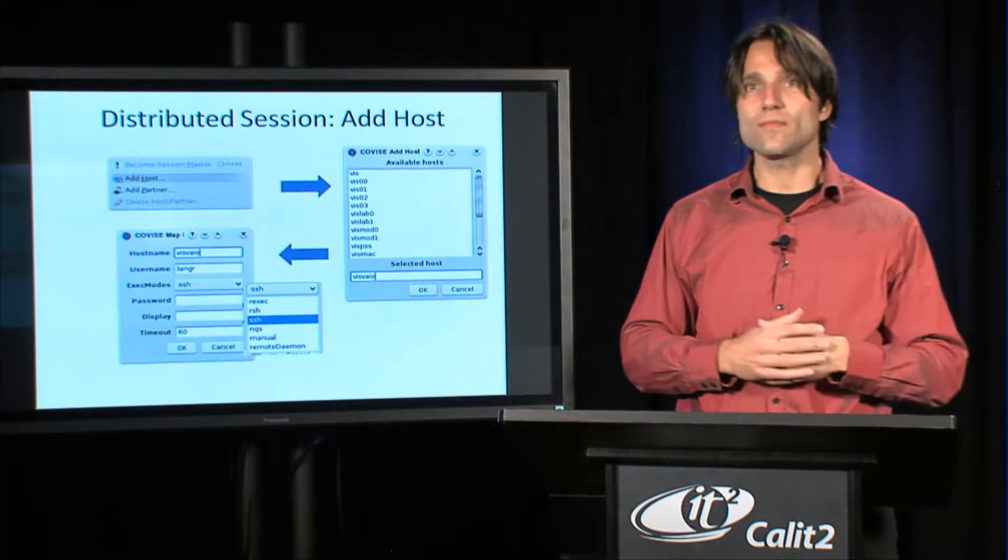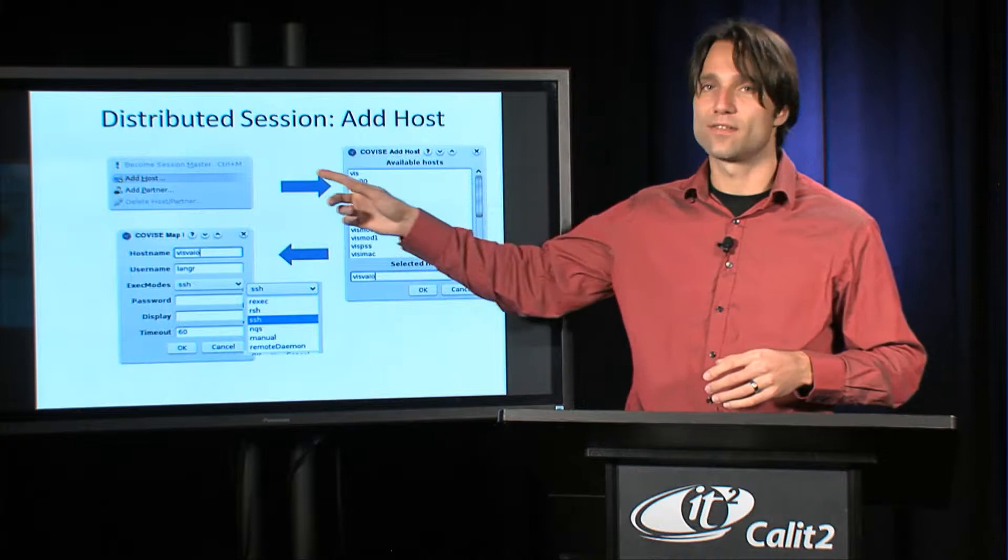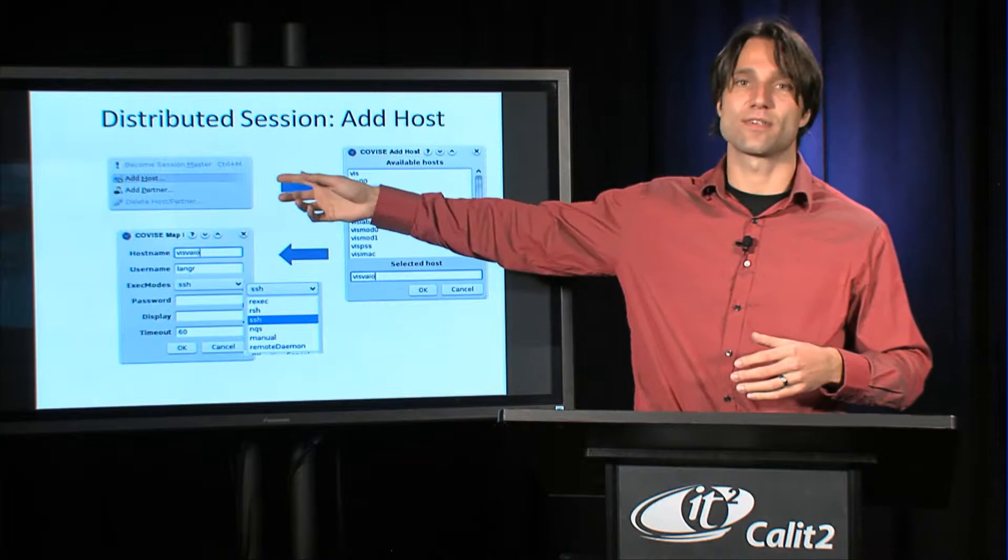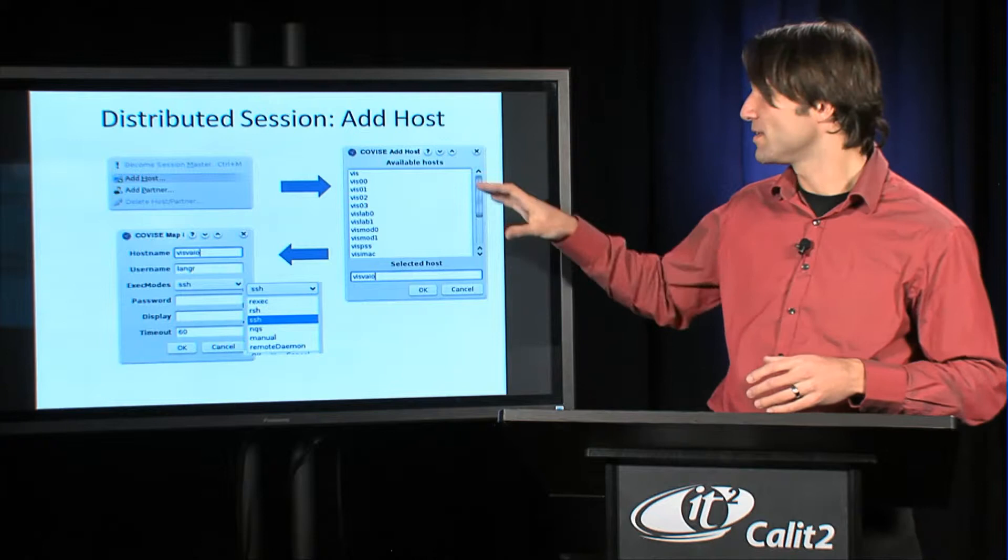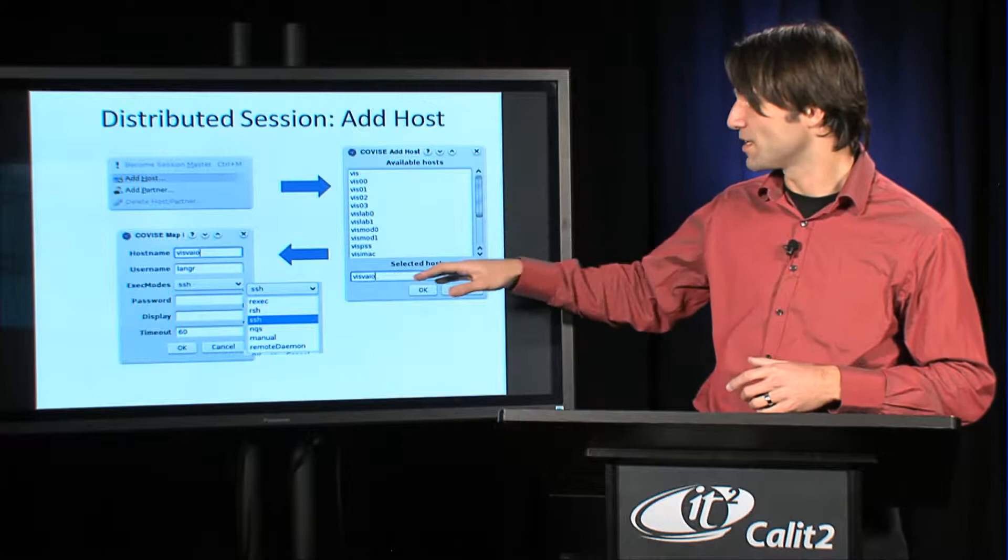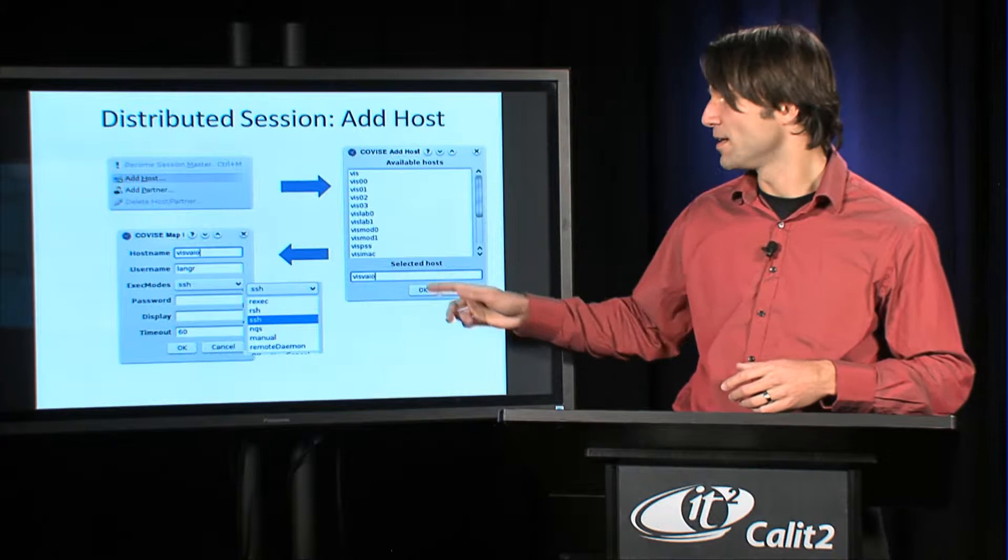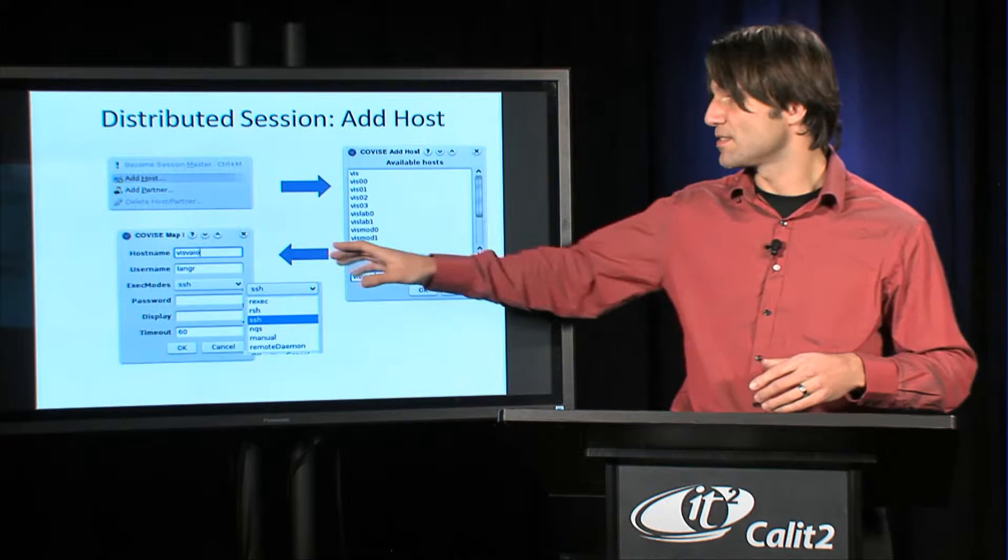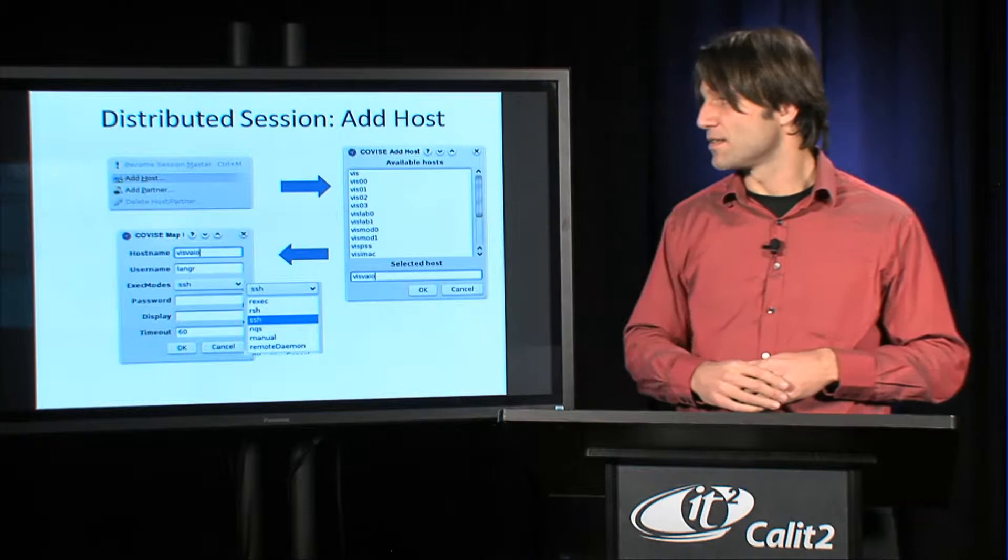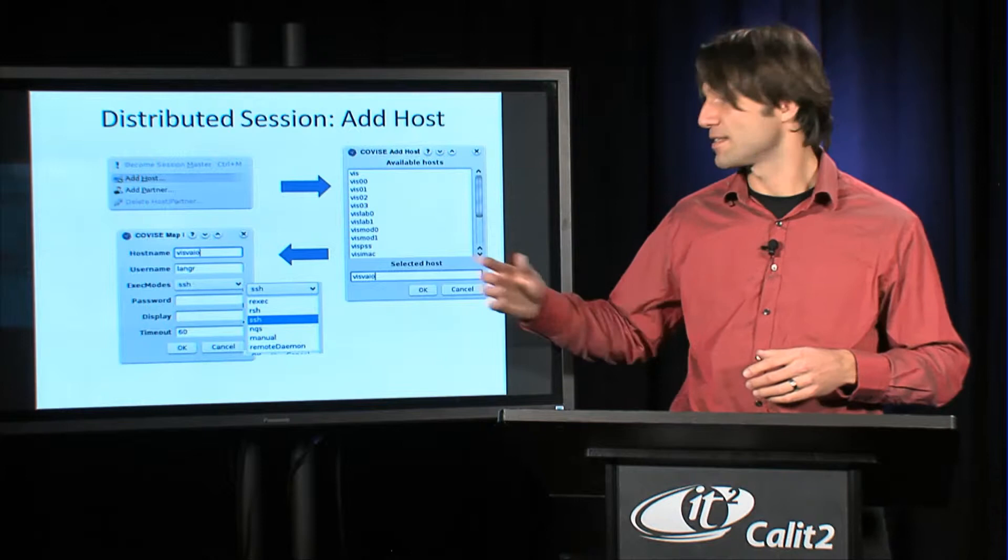In order to run a distributed session, you would go in the map editor window, go to the add host item in the menu and then get a window like this, where you can see a list of available hosts that you've used in the past, or you can enter your own new host in the text box here. Once you've done that, you'll get another window that allows you to set various parameters for this host: the machine name, the user name, a password, and execution mode.